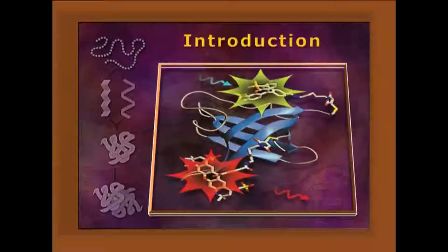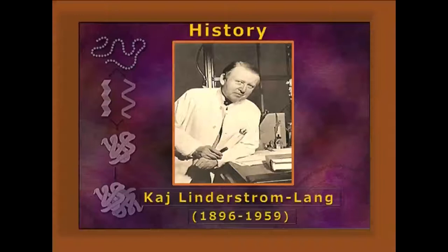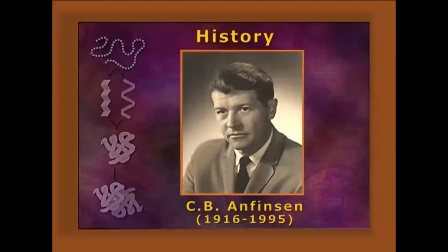When the globular protein is folded, it obeys a geometric pattern and it is kinetically oriented. There are proper thermodynamics which predict the protein structure. In 1951, Linda Strom, who actually coined the term primary structure of the protein, discussed that hydrophobic interaction is important for making the protein structure. In 1972, C.B. Anfinsen got the Nobel Prize for his Anfinsen dogma, which tells us that the sequence of the amino acid predicts how the biological conformation of the protein will be made.